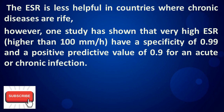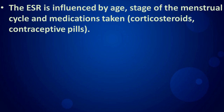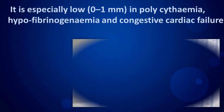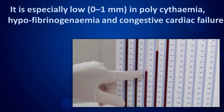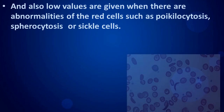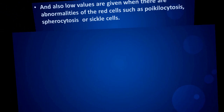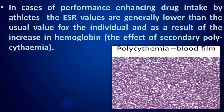The ESR is influenced by age, stage of the menstrual cycle, and medications taken. It is especially low in polycythemia, hypofibrinogenemia, and congestive cardiac failure. Low values are also given when there are abnormalities of the red cells such as poikilocytosis, spherocytosis, or sickle cells. In cases of performance-enhancing drug intake by athletes, ESR values are generally lower than the usual value for the individual, as a result of the increase in hemoglobin.